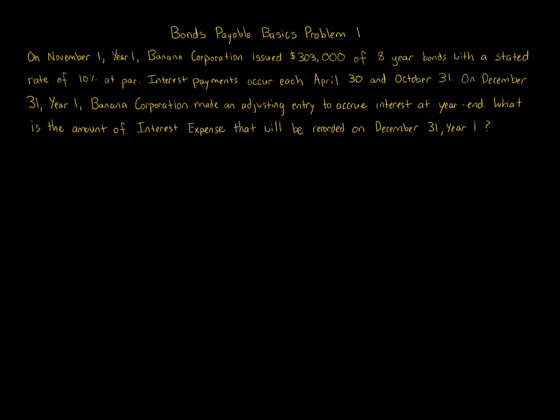Bonds Payable Basics Problem 1. On November 1st, Year 1, Banana Corporation issued $303,000 of 8-year bonds with a stated rate of 10% at par. Interest payments occur each April 30th and October 31st. On December 31st, Year 1, Banana Corporation made an adjusting entry to accrue interest at year end. What is the amount of interest expense that will be recorded on December 31st, Year 1?